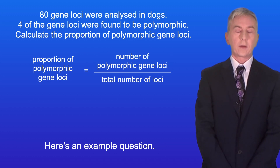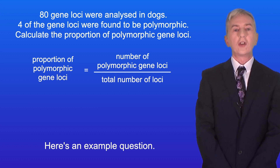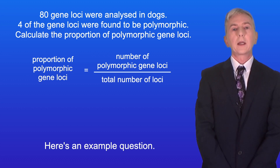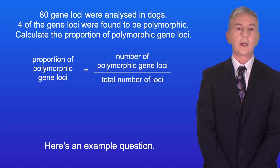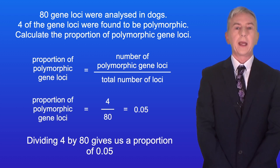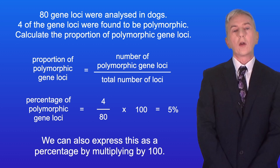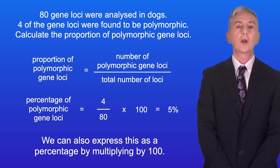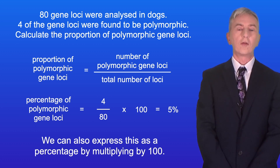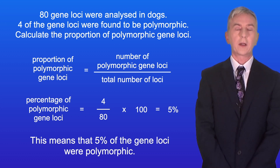Here's an example question. 80 gene loci were analysed in dogs. Four of the gene loci were found to be polymorphic. Calculate the proportion of polymorphic gene loci. Dividing four by 80 gives us a proportion of 0.05. We can also express this as a percentage by multiplying by 100, which means that 5% of the gene loci were polymorphic.